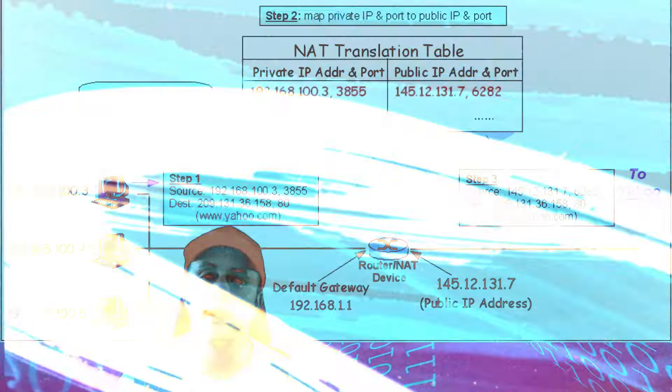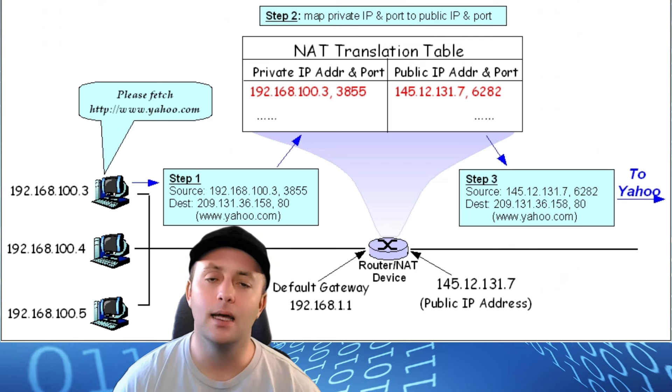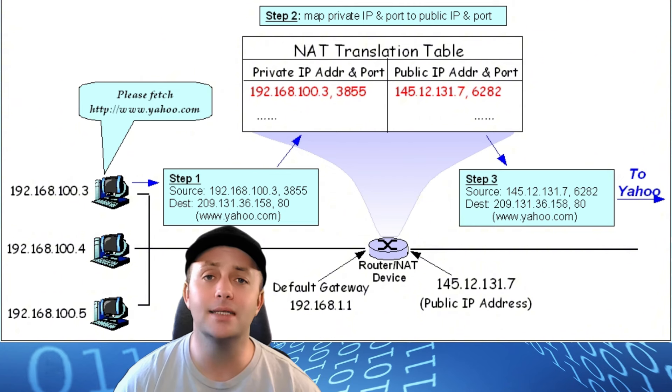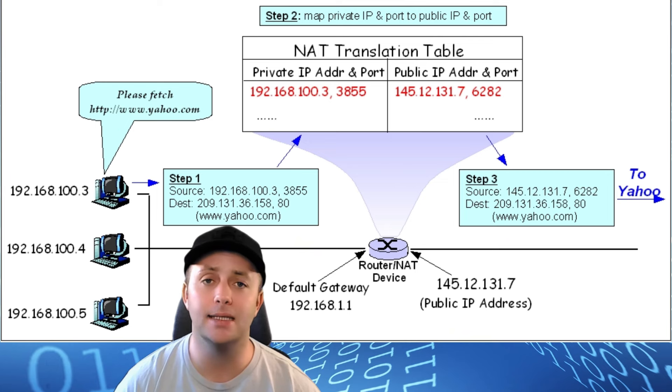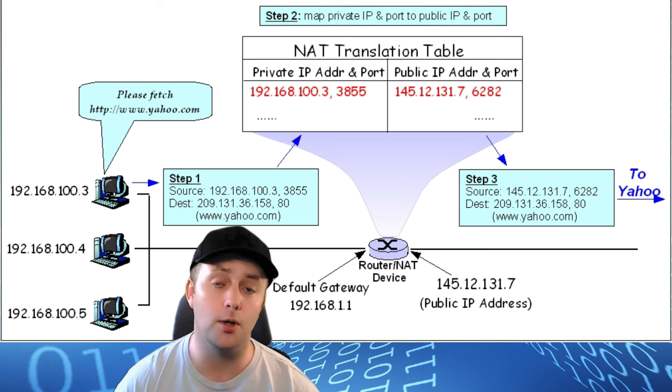But how does the router know which device should receive the response? That's where the NAT table comes into play. The NAT table is a database that keeps track of each connection. When a device on the local network sends data to the internet, the router adds an entry to the NAT table, associating the private IP address of the device with the public IP address and the port number used for the connection. When the response comes back, the router checks the NAT table to see which device it should forward the data to based on the port.